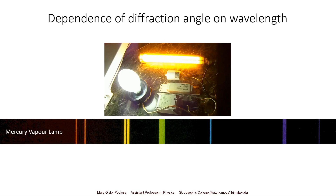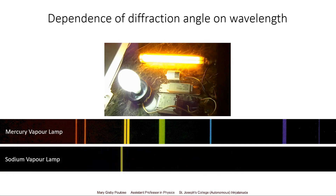Will we have the same spectra for the sodium vapour lamp? No. If we take the spectra of the sodium vapour lamp, we will have just the two yellow lines of sodium, and their position is different — their wavelength is different from that of the yellow lines of the mercury vapour lamp. There is only a slight change in nanometers, but even that slight change is its characteristic wavelength.